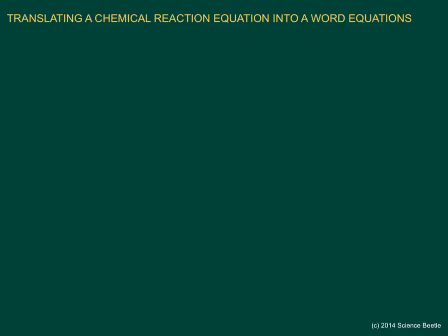So let me go ahead and write one up here and then we'll begin translating. Here we have this equation and we're going to just go ahead and translate this. Now what are some of the skills that you're going to need? You are going to need to know how to read a chemical name, so you need to be able to come up with a chemical name for each of these compounds. That's an essential skill in order to complete these types of problems.